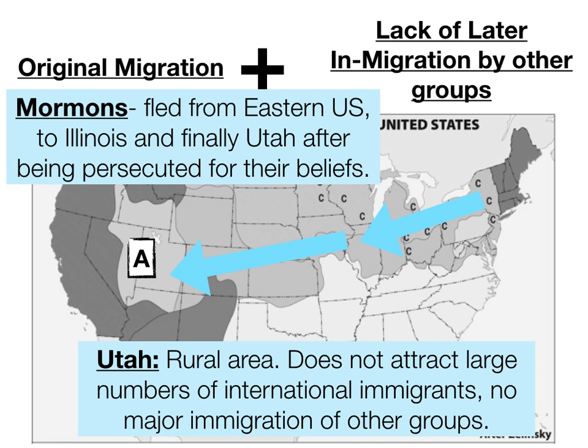The Mormons flourished in Utah and actually spread out to the surrounding regions, including southern Idaho, eastern Nevada, and northern Arizona. Since Utah is a rural area, it did not attract large numbers of international immigrants subsequently. There have been really no major in-migrations of other groups, and that's why this region remains predominantly Mormon to this day.